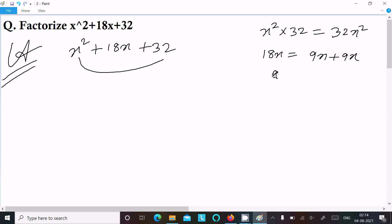If I multiply 9x into 9x, it equals 81x squared. 9 into 9 is 81, and x into x is x squared. So it's not equal to 32. 81x squared is not equal to 32x squared, so this is rejected.